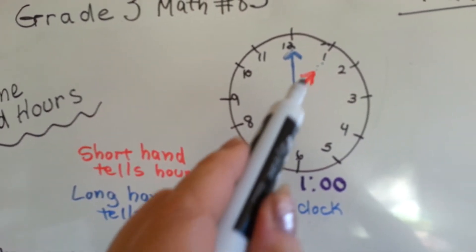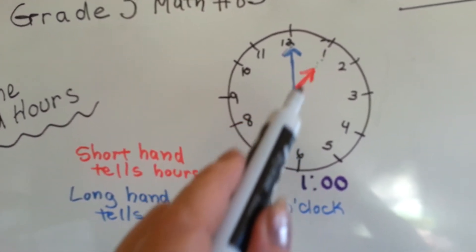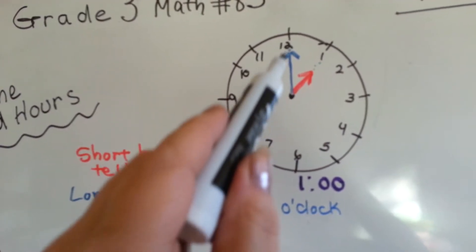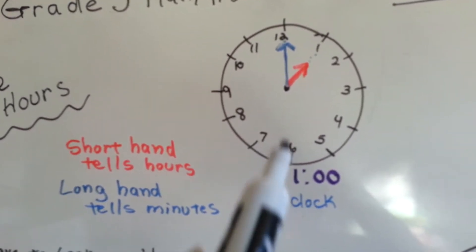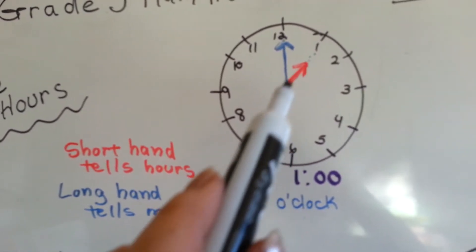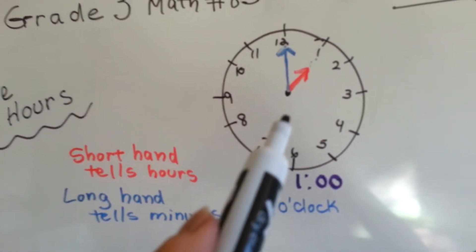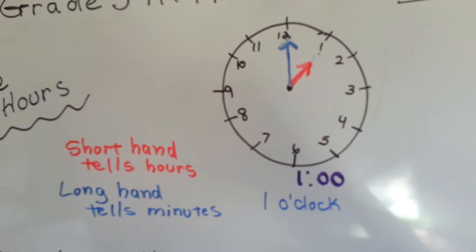When the short hand is pointing to a number and the long hand is on the 12, it's o'clock. So this is pointing to the 1, this hour hand is pointing to the 1, so it's 1 o'clock.